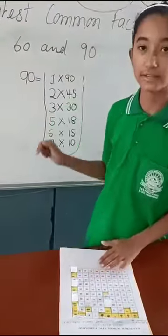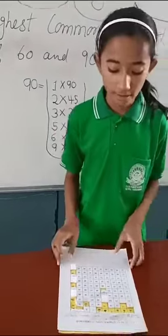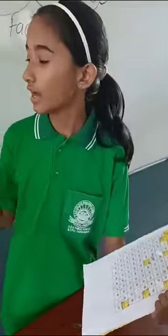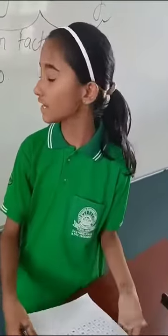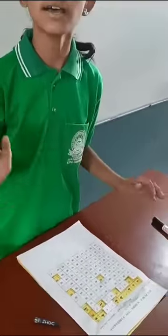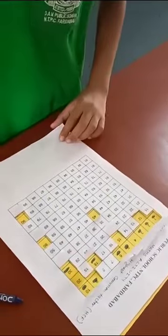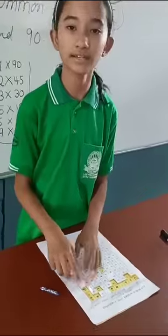So the colored numbers are the common factors of 60 and 90. The HCF is the highest number in the factors. So the highest number is 30.